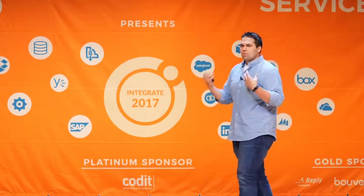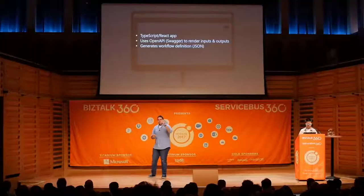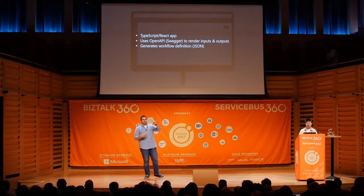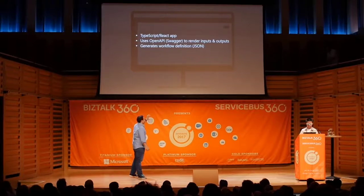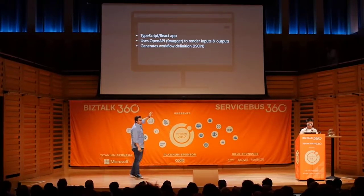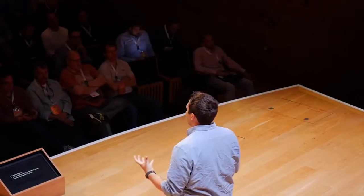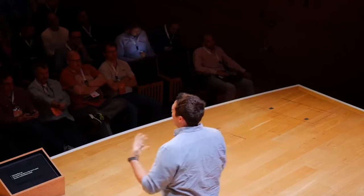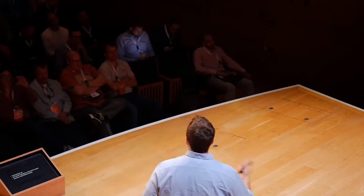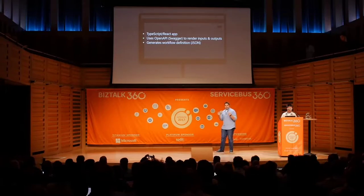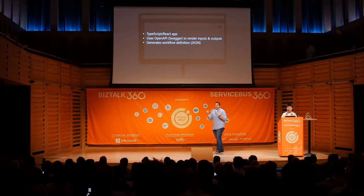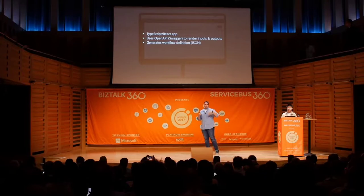In terms of generating those nice inputs and outputs — so if I'm saying 'send an email,' I may see a To field, a From field, and a Subject field — all of that is just generated by looking at OpenAPI, or Swagger, to render the inputs and outputs. Swagger gives you a way to describe an API, explain what its operations are, and what the inputs and outputs are. All this TypeScript app is doing is going and looking at Swagger for different connectors or operations and rendering the card. That's pretty much all it's doing.